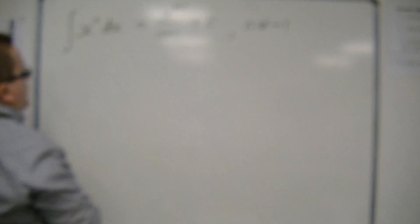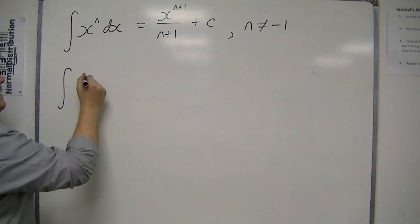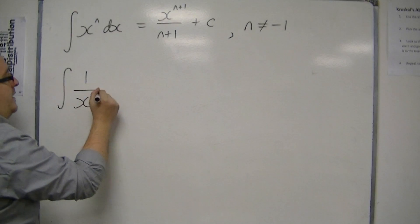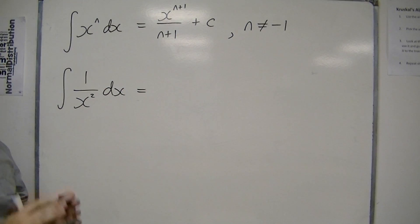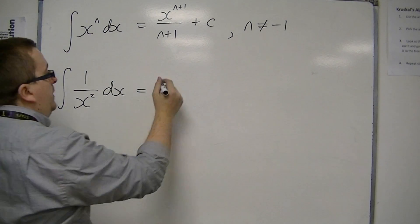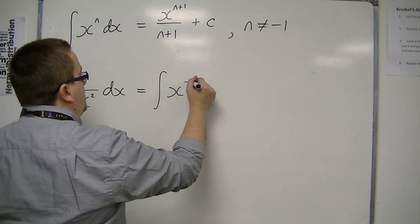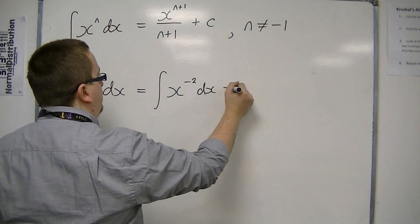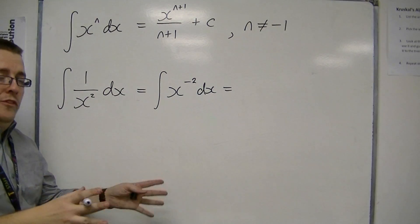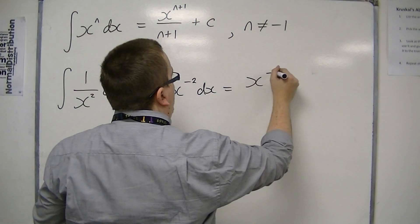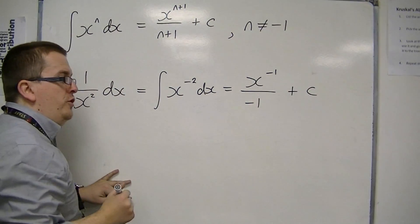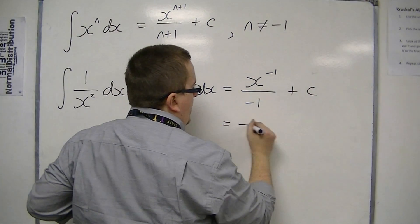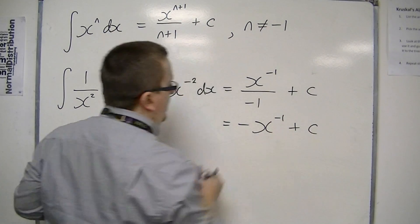For example, if you had to integrate 1 over x squared dx, first of all, write it as a power of x. That's the integral of x^(-2) dx. I add 1 to the power, divide by the new power, and remember that constant of integration. So you could write that as -x^(-1) + c.